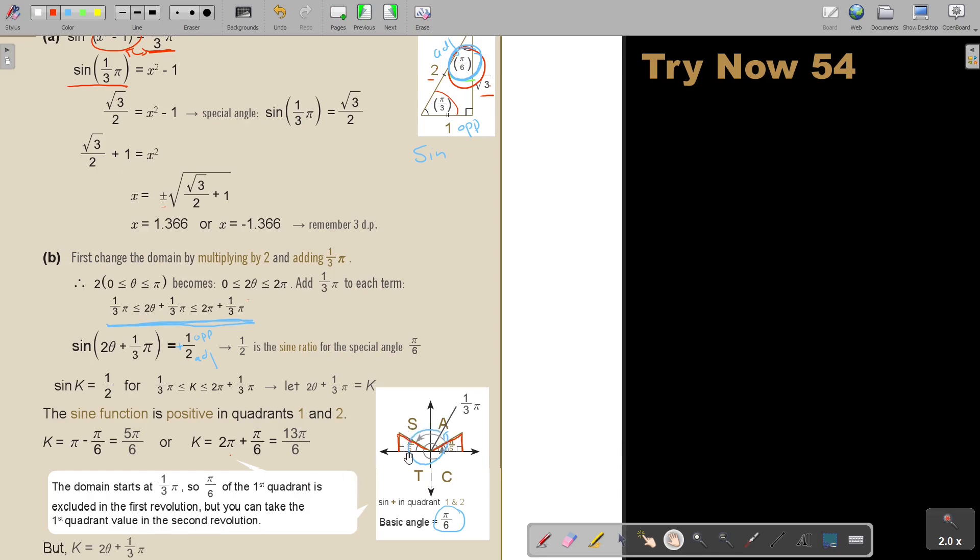As soon as you go to 2 pi plus that third, it's going to be there, so it's 2 pi plus that pi over 6. And the second one, this is in the first one, remember that this is always pi, so pi minus that pi over 6 for the first one. And for the second one, it's the 2 pi because it's 2 pi plus that little, in the second round.